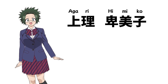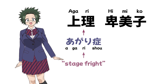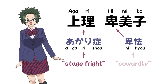Agari Himiko is up next. Her last name, Agari, comes from the phrase 'Agari Shou,' which means 'stage fright.' The 'Hi' in her first name Himiko comes from the word 'Hikyo,' meaning 'cowardly,' which probably explains why she stutters and appears constantly bashful. As a side note, 'Miko' literally means 'beautiful child,' but it's just a common suffix for Japanese girls' names, as is 'Ko' on its own, like in Shouko.